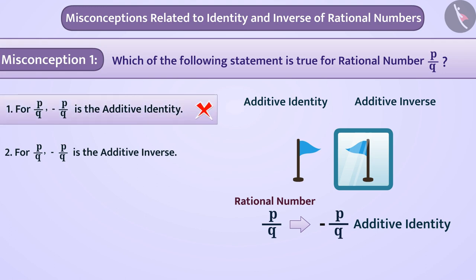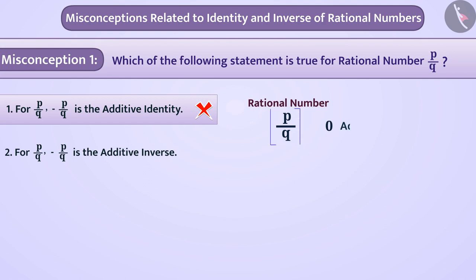Remember that 0 is additive identity for rational number because addition of 0 to any rational number makes no change in the value of rational number. Means its identity is not changed.